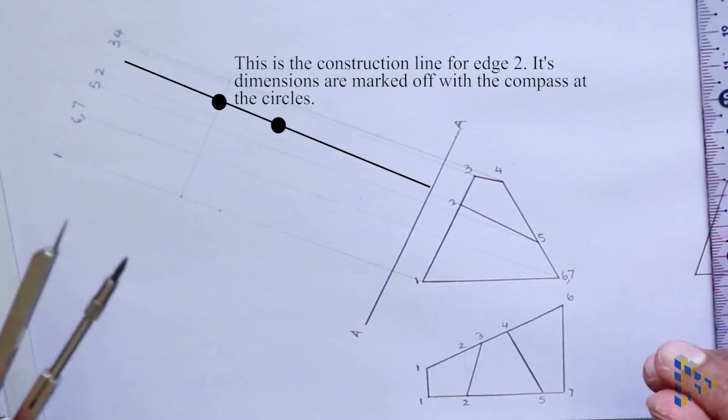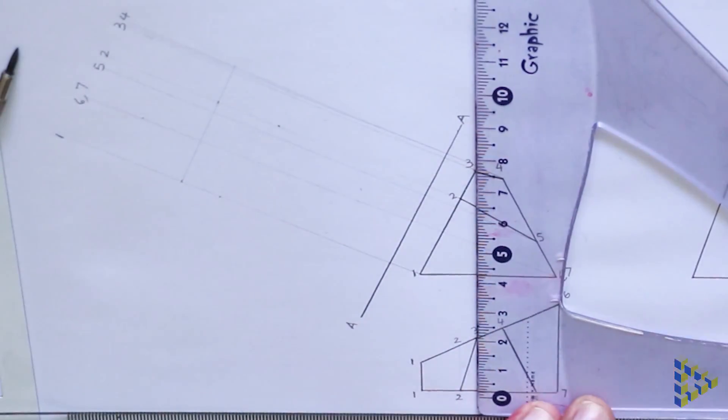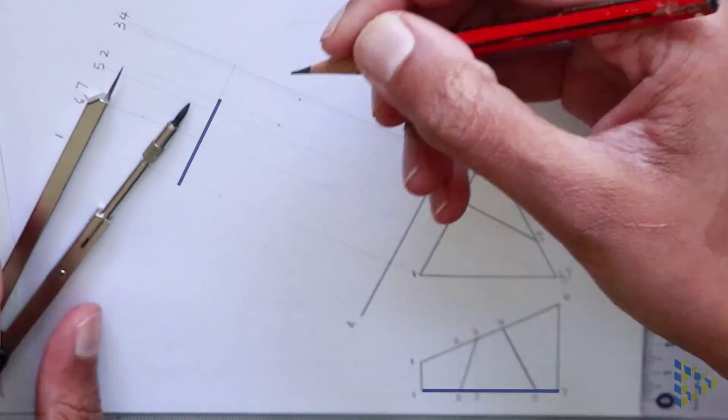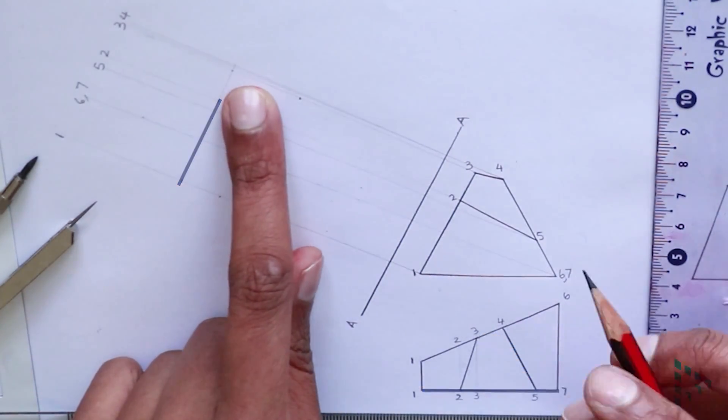Next, 2 is measured off. The plan view and its dimensions are marked off on the 2 construction lines. Note that the bottom of 2 on the plan view is in line with the bottom of 1 in the auxiliary drawing.